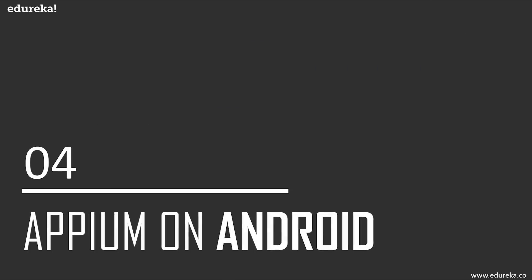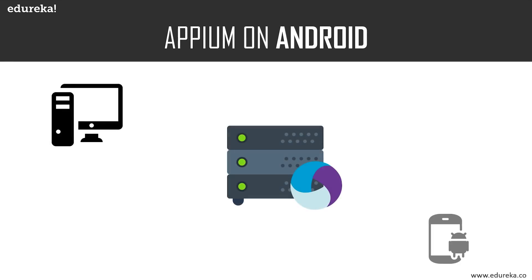Now let's discuss how Appium works on Android and iOS. Appium on Android uses the UI Automator framework for automation. The client has the client libraries and the necessary JAR files already installed. For Appium to run for automation purposes, you need both these files. The Appium client, whether written in Java or Python, connects with the Appium server and communicates via the JSON wire protocol. JSON objects are sent using the JSON wire protocol for communication between the client and the server.